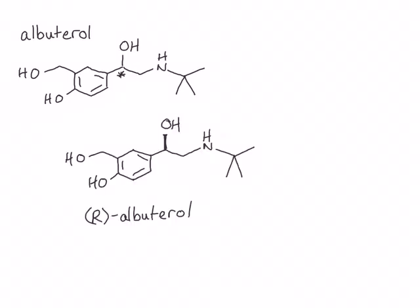If you assign the priorities of the groups on the chiral center, you'll see that the hydroxyl group is priority one, the nitrogen-containing group is priority two, and the arine-containing group is priority group three. Rotation here is clockwise, making this the R enantiomer.